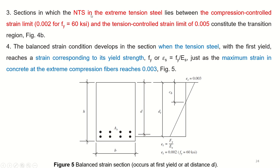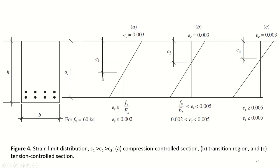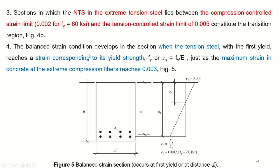Sections in which the net tensile strain in the extreme tension steel lies between the compression control strain limit and the tension control strain limit constitute a transition region. The balanced strain condition develops when the concrete reaches its ultimate strain at the same time steel is yielding — both fail simultaneously. This is the balanced section where failure is very sudden and gives no warning. So at the balanced condition, concrete is at 0.003 and steel is at 0.002 simultaneously.